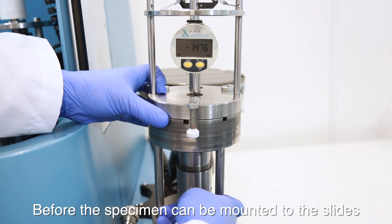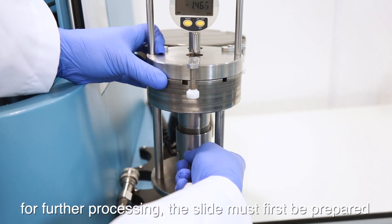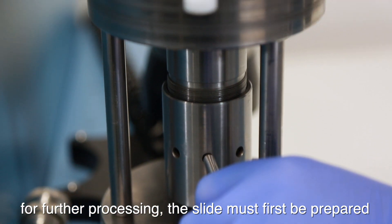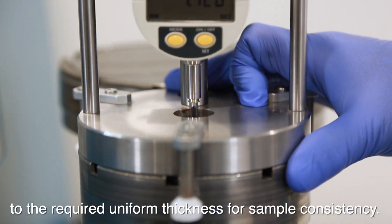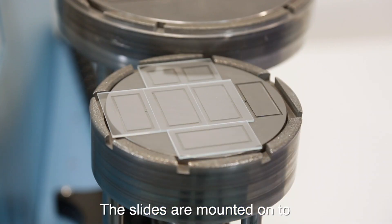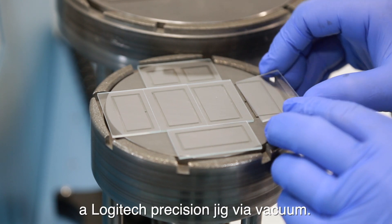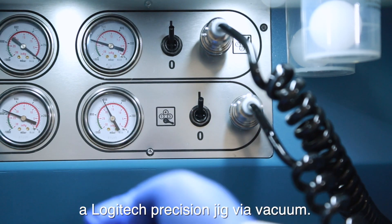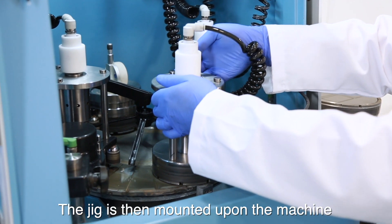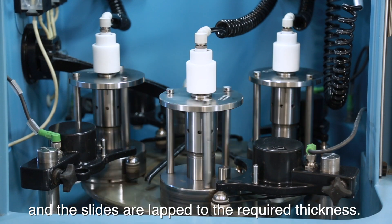Before the specimen can be mounted to the slides for further processing, the slide must first be prepared to the required uniform thickness for sample consistency. The slides are mounted onto a Logitech precision jig via a vacuum. The jig is then mounted upon the machine and the slides are lapped to the required thickness.